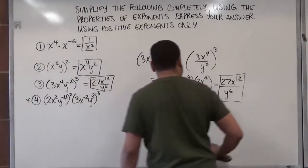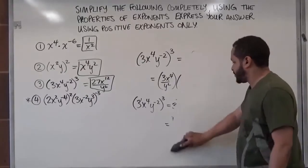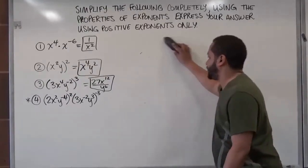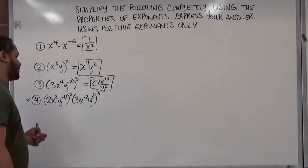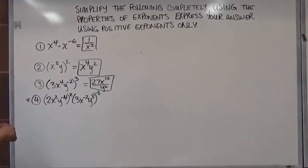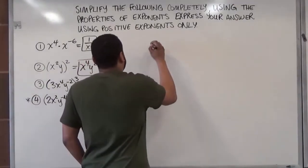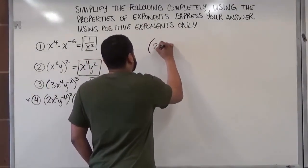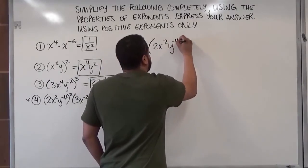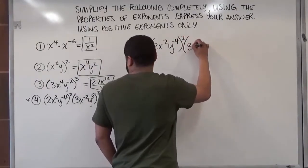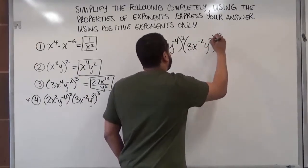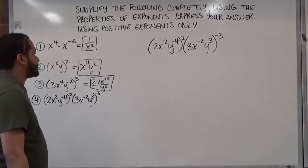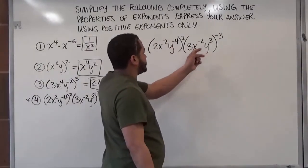Let's get on to the last problem — this is the most challenging problem, so I put an asterisk next to it to show the difficulty level. To do this problem it's probably better that we use the properties of exponents. We have 2x to the second, y to the negative fourth power, to the second, multiplied by 3x to the negative second, y to the third, to the negative third. Our first step is to move the negative exponents to denominators.